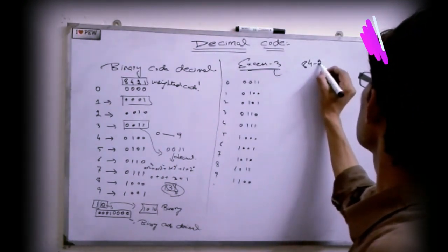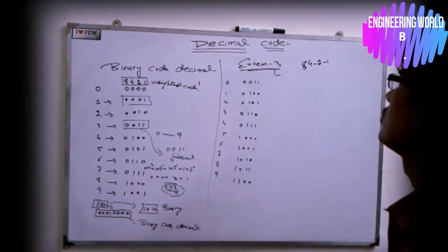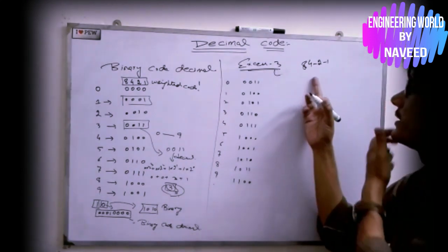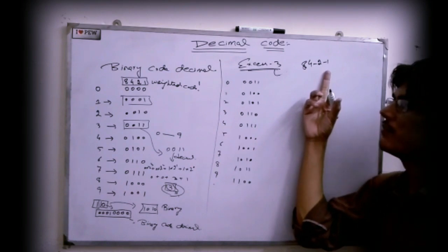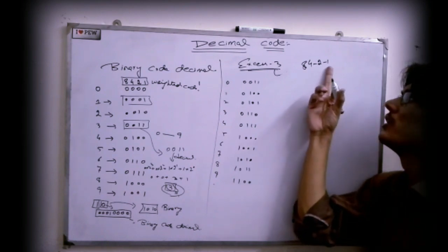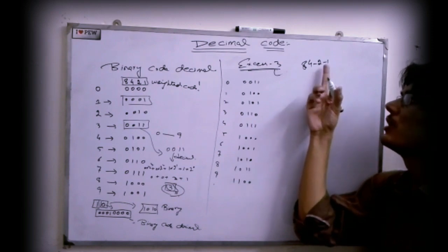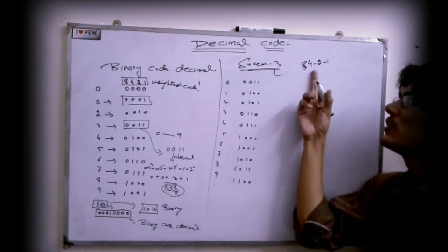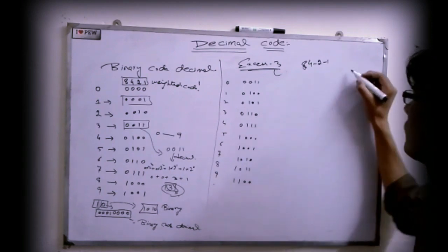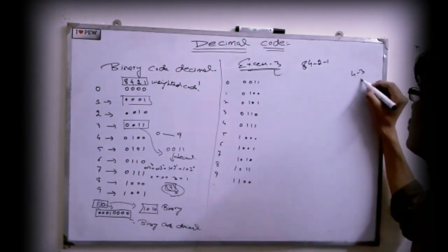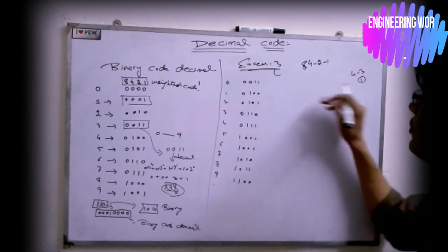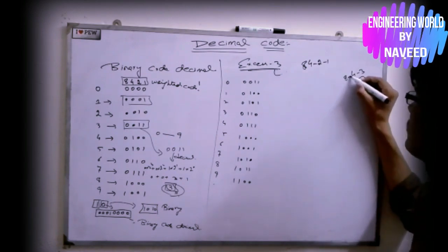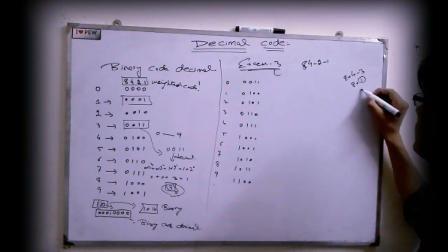The decimal code is 8, 4, minus-2, minus-1. This means that if your first binary digit (least significant digit) is on, you subtract 1; if the second digit is also on, you subtract 2; if the third digit is on, you subtract 3 from the result; and if the fourth digit is not zero, you add 8. So you can get values like 9.